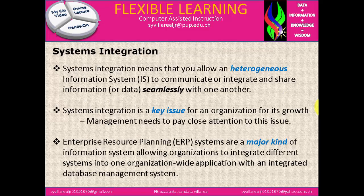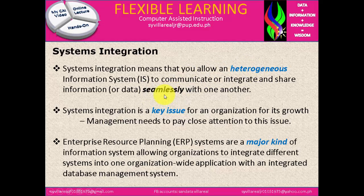We have here the meaning of system integration. The first one is: system integration means that you allow heterogeneous information systems to communicate or integrate and share information or data seamlessly with one another. When we say heterogeneous, it means a different kind — for example, a kind of database connected to a kind of application software like Visual Studio, or it could be a web-based server connected to Oracle or FoxPro. Seamlessly means there should be no errors in the connection or in the integration so that we can use the system; otherwise, if there is an error, it is not seamless.